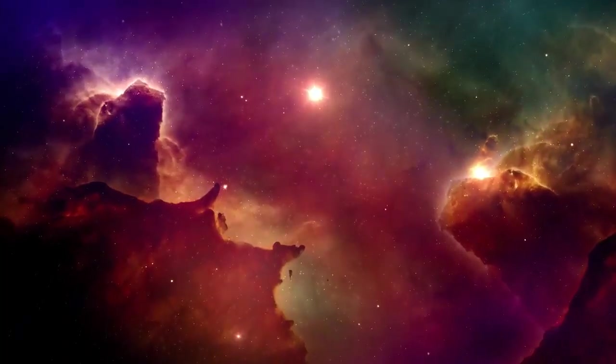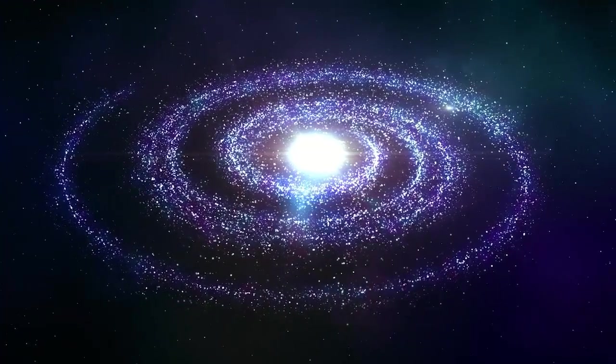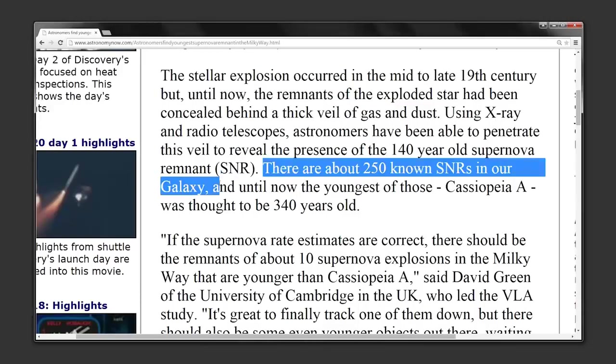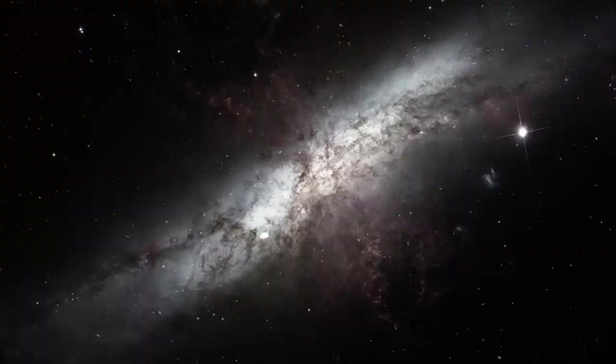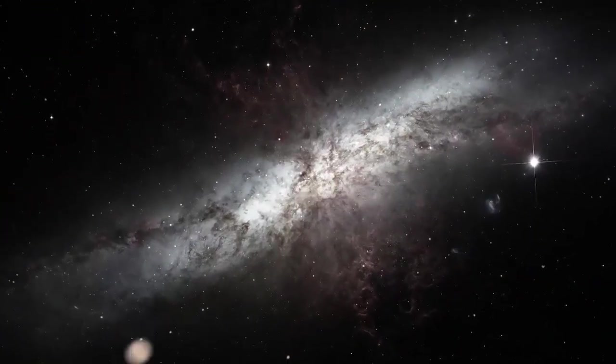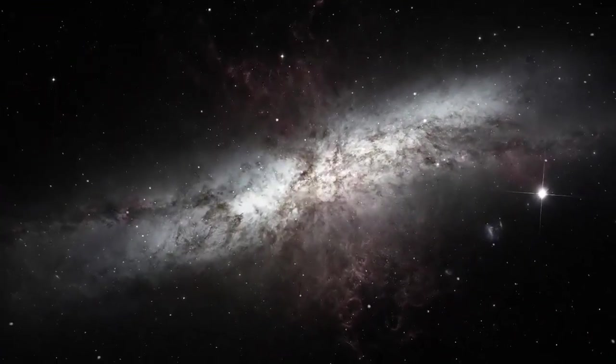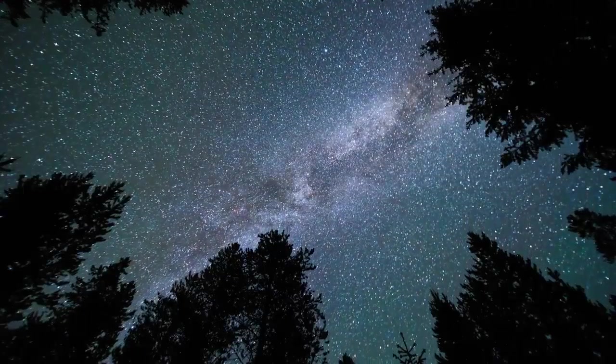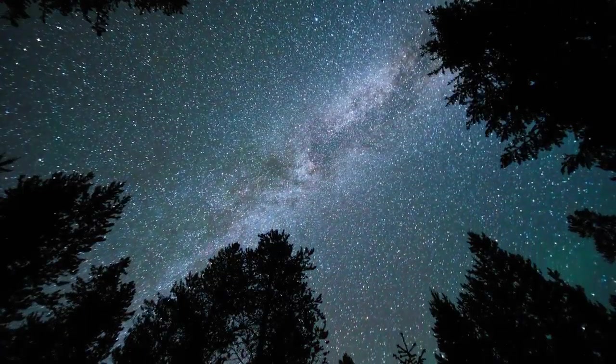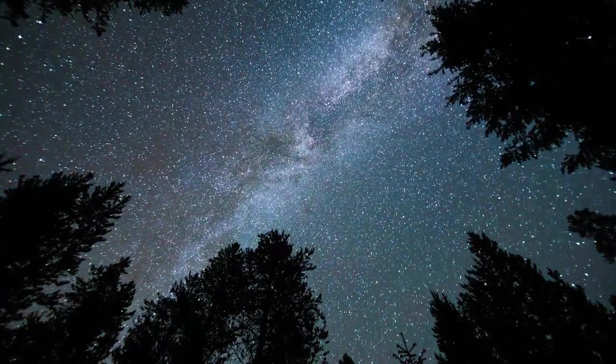In looking for supernova remnants in our own Milky Way galaxy, astronomers have discovered a total of only about 250. So if a supernova occurs approximately every 26 years as we see from these other galaxies, a total of 250 supernova remnants would indicate an age of around 6500 years for our galaxy. That's almost identical to the Bible's indication of how long our world has existed.